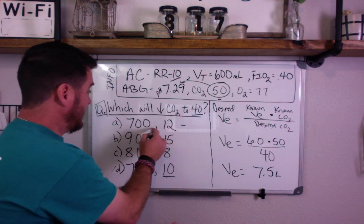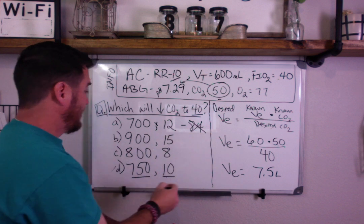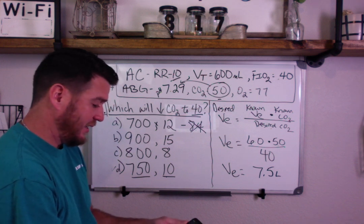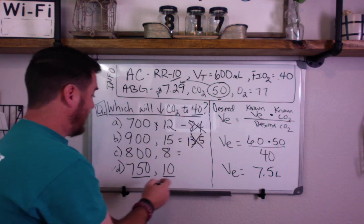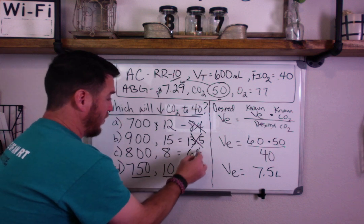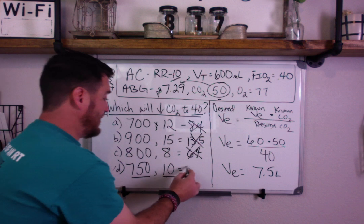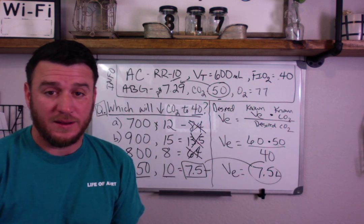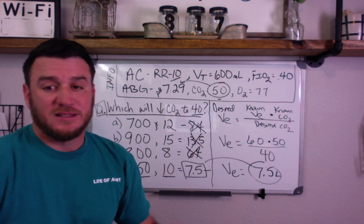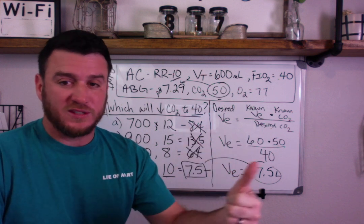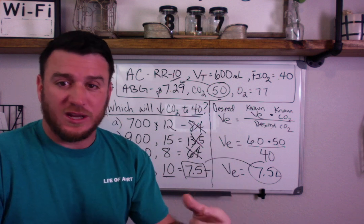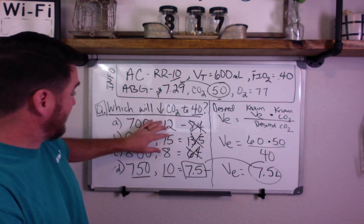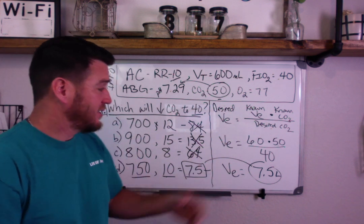Now find the answer option that gives a minute ventilation of 7.5 liters. Option A: 700 × 12 = 8.4 L — too high. Option B: 900 × 15 = 13.5 L — too high. Option C: 800 × 8 = 6.4 L — too low. Option D: 750 × 10 = 7.5 L — that's our answer. The minute ventilation method confirms option D is correct.